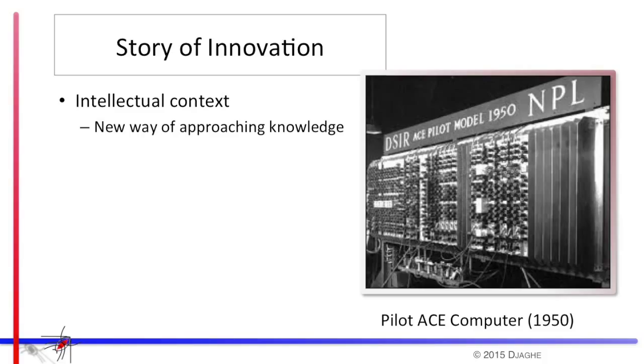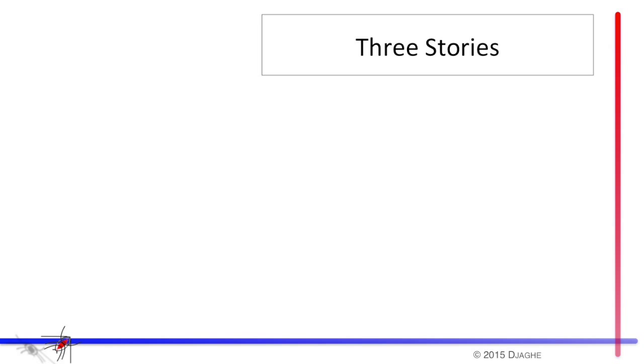The second will be the practical context, the kind of tools and abilities and skills people had to create new devices. And third, we will look at the contextual need, what problem needed to be solved. Now to understand these contexts, we're going to humanize them. We're going to look at three stories of three different people that will help us understand context.